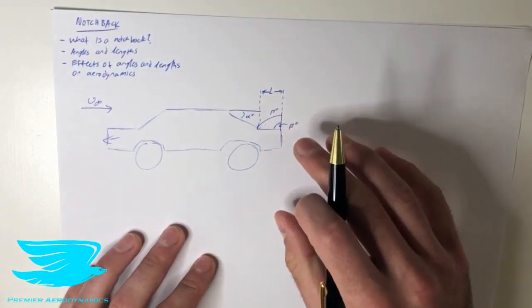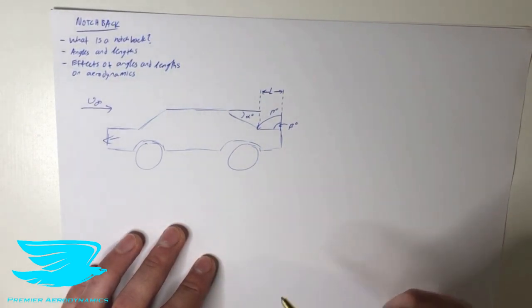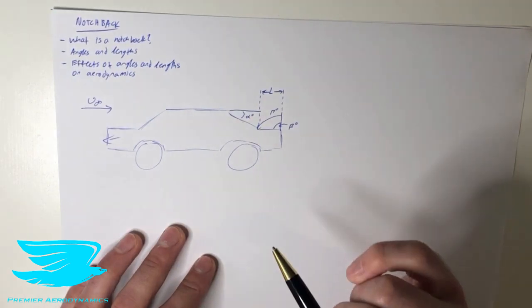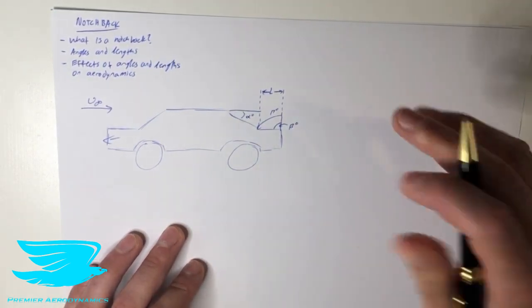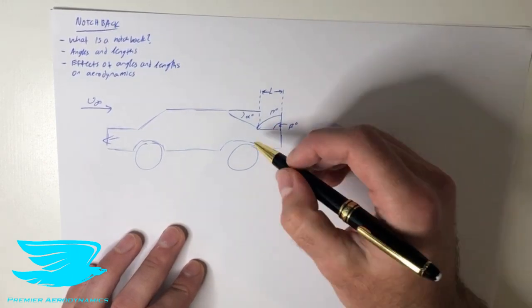So this is very important, because there's a different aerodynamic phenomenon that occurs behind the car because of this. So let's talk about this angle first, alpha. What does it do? So from that video that we saw with the fastback, it definitely controls the strength of certain vortices.